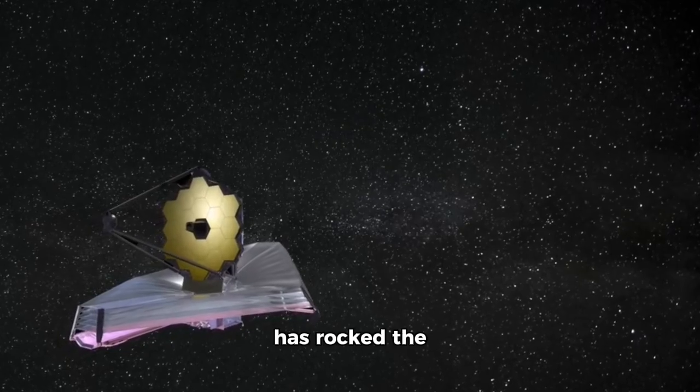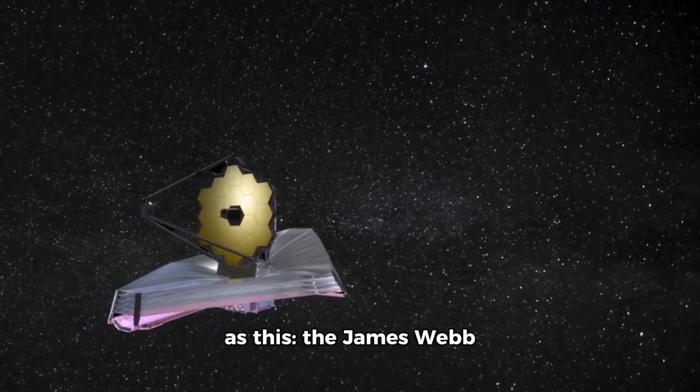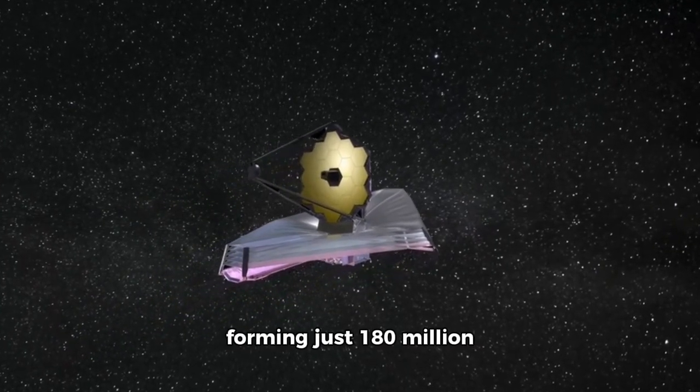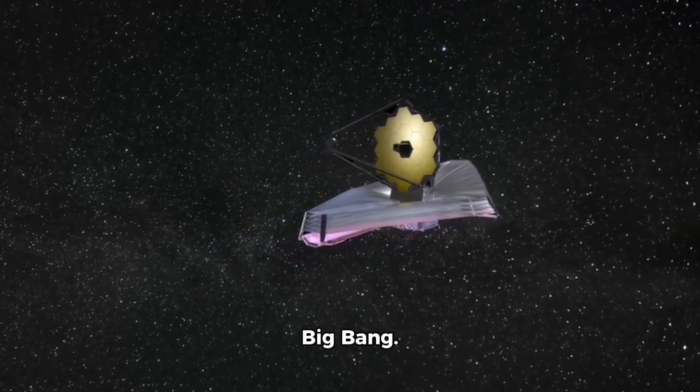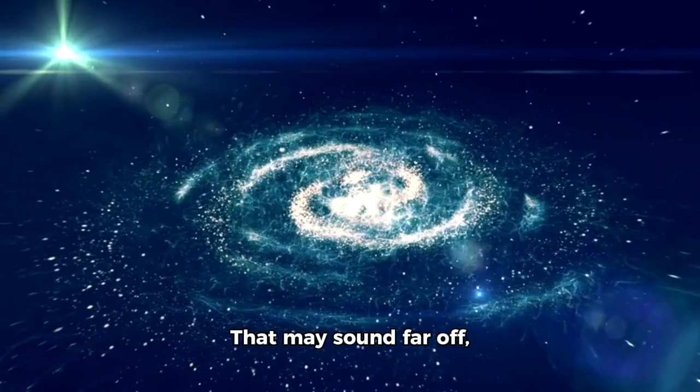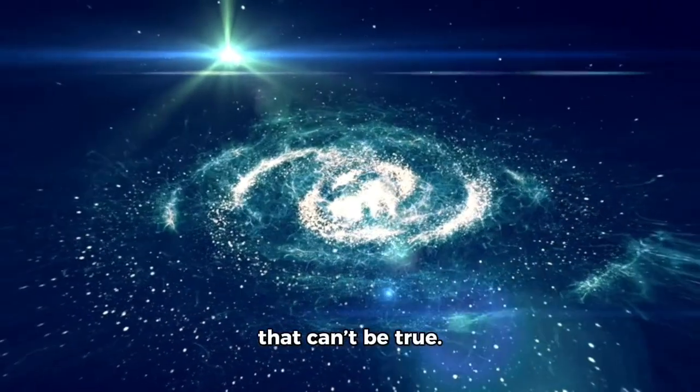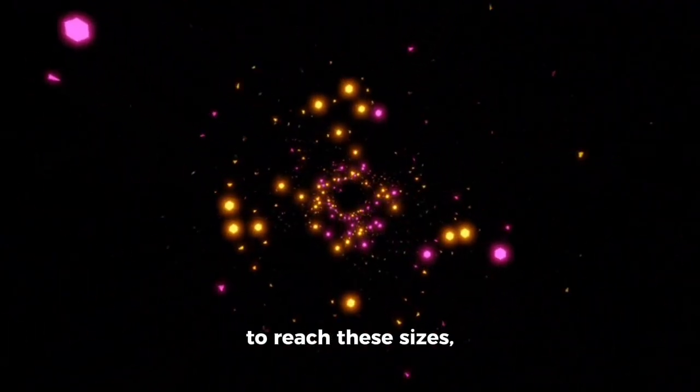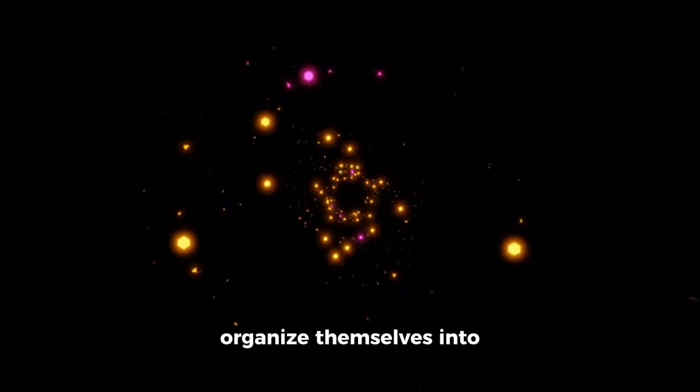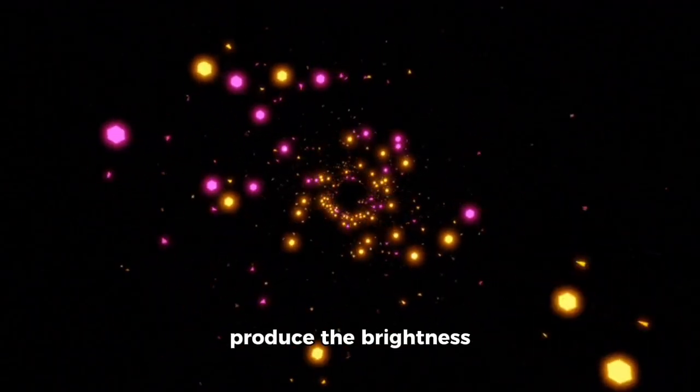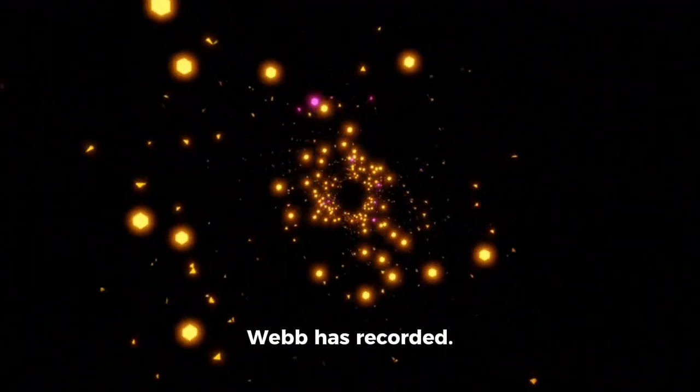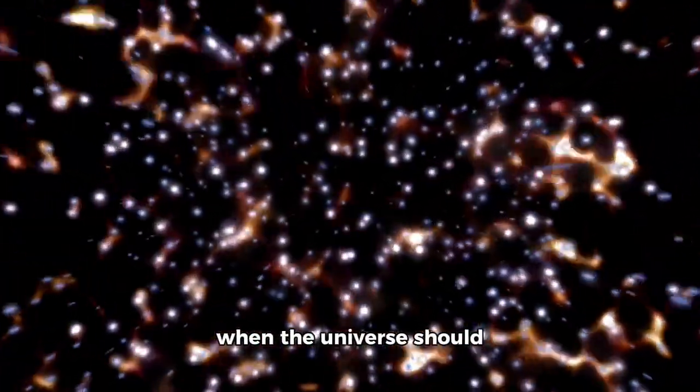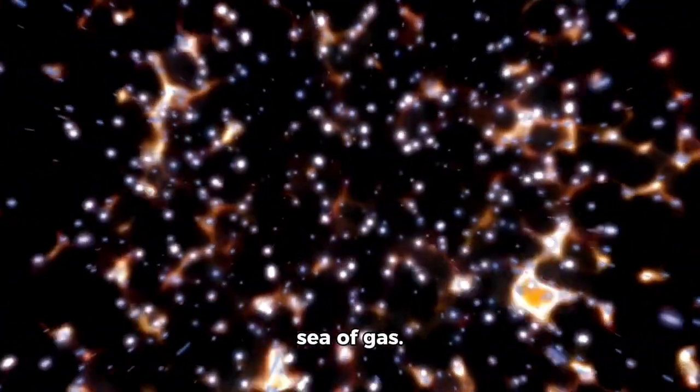But no discovery has rocked the scientific world as much as this: The James Webb Telescope has found massive, mature galaxies forming just 180 million years after the supposed Big Bang. That may sound far off, but in cosmic terms, that's impossible. According to our current models, galaxies shouldn't have had sufficient time to reach these sizes, organize themselves into spiral structures, or produce the brightness Webb has recorded. These galaxies are as fully formed and as big as the Milky Way, stable when the universe should have still been a chaotic sea of gas.